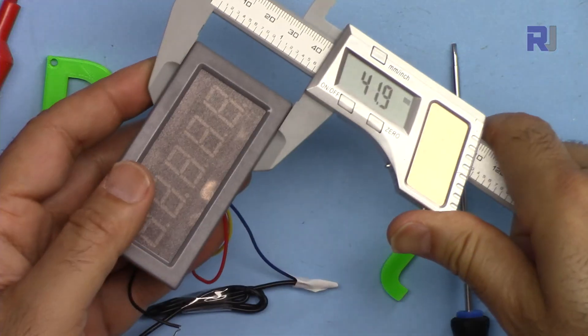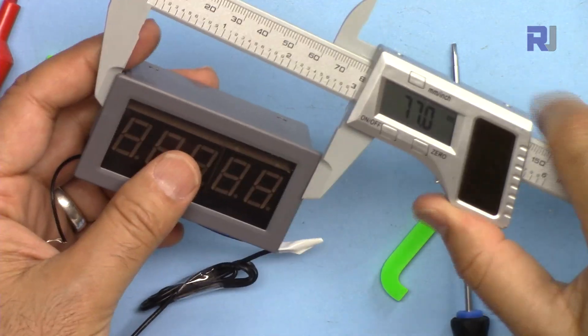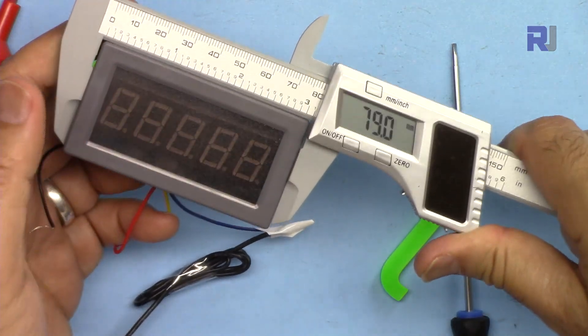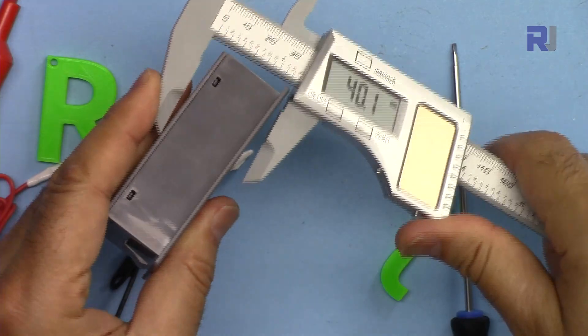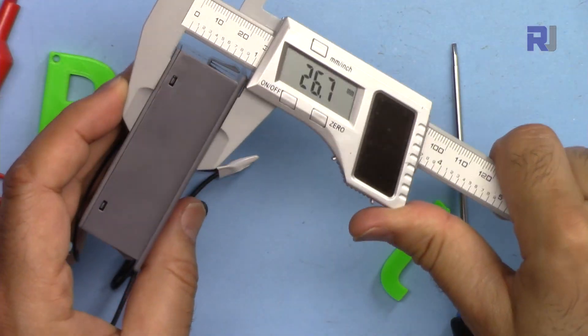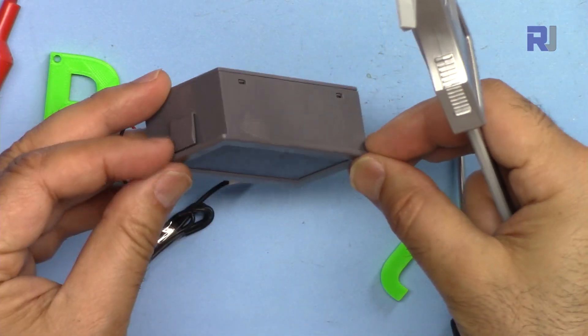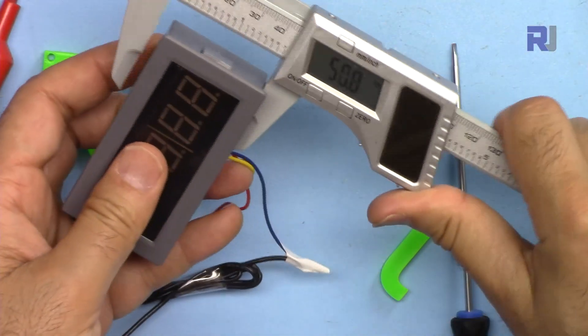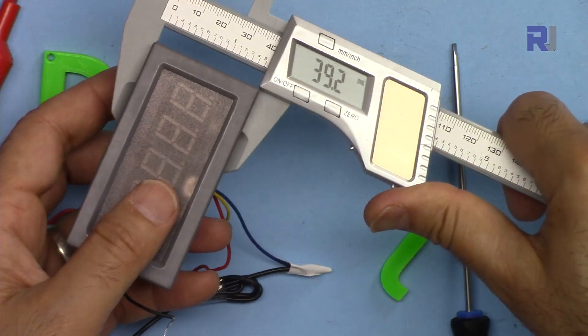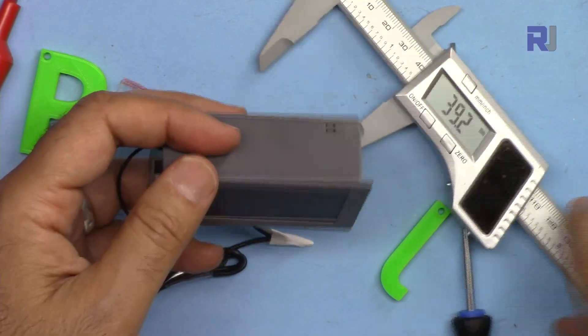The width is 42 millimeters, the length is 79 millimeters, the depth is 26.7 millimeters. And if you are inserting it in a panel, it is 72 millimeters length and 39.2 millimeters width to create the hole for this.